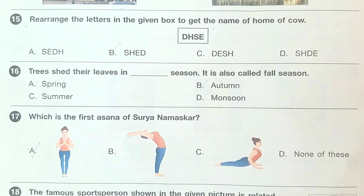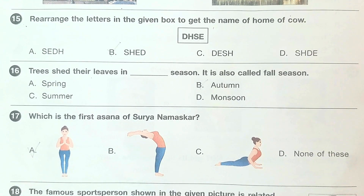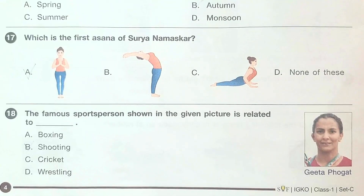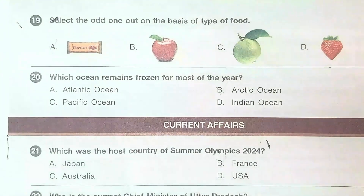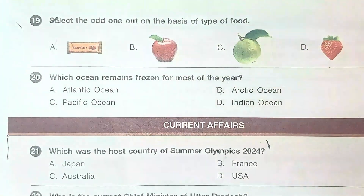Seventeenth question: which is the first asana of Surya Namaskar? The answer is option A. Question number 18: the famous sports person shown in the given picture is related to which sport? The answer is option D, Wrestling. Question number 19: select the odd one out on the basis of type of food. The answer is option A, Chocolate.